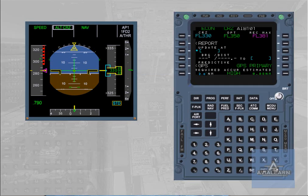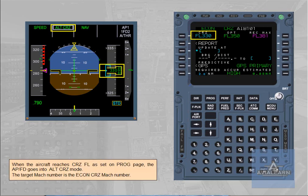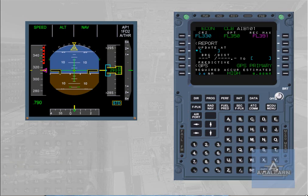When the aircraft reaches the cruise flight level as set on the PROG page, the autopilot flight director goes into altitude cruise mode. The target Mach number is the Econ cruise Mach number. If the aircraft is cleared by ATC at a level different from the one inserted on the PROG page, the altitude will be displayed on the PFD. It is recommended to update the cruise flight level on the PROG page to the new value for flight efficiency.